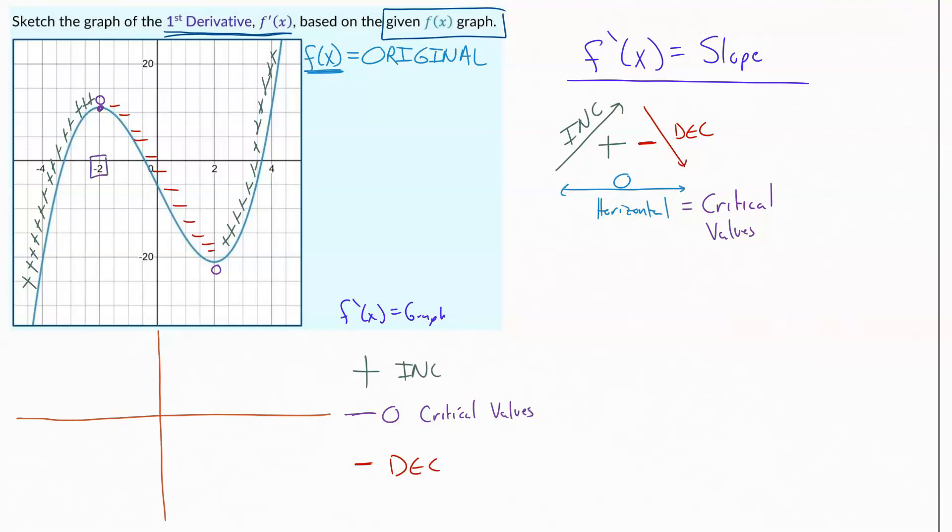So at negative two, I know my slope is zero. So the first thing I do is come down and at negative two, I'm going to put a dot at zero. I also know that at x equals two, I have a slope of zero. So I go ahead and I mark that. I know for sure where that's going to go. It's going to be marked right there.